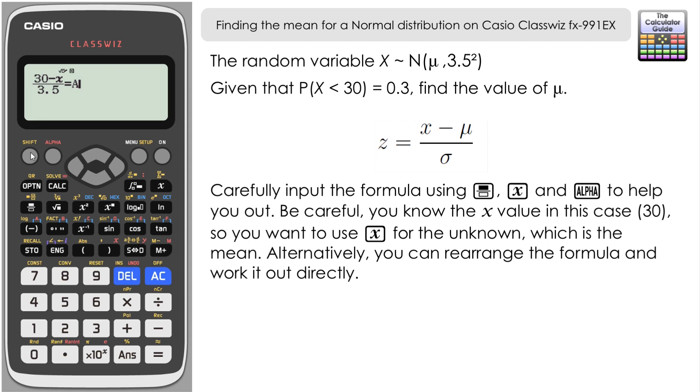Now we want to solve for the unknown x. Remember that's representing our mean. So shift and solve. It comes up as 0 by default or whatever your previous value of x was if you've done some calculations before this. We'll just press equals at this point to solve for x.